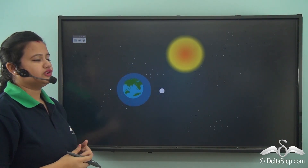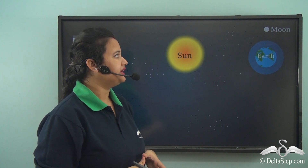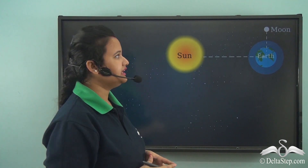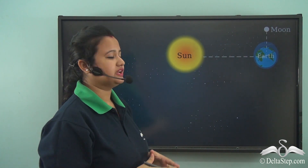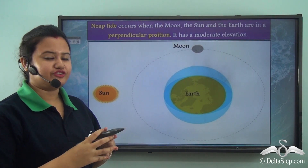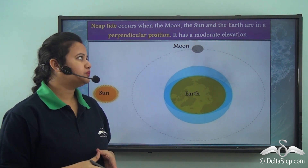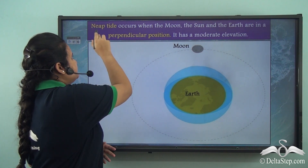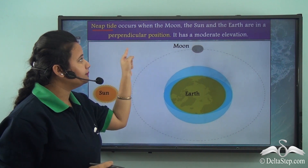As the earth revolves around the sun and the moon revolves around the earth, it sometimes happens that these celestial bodies are aligned at 90 degrees, or in a perpendicular position. In this case, the moon and the sun pull the water bodies on the earth's surface in two opposite directions, so the water level does not rise much. This situation is known as neap tide, which occurs when the moon, sun, and the earth are in a perpendicular position.